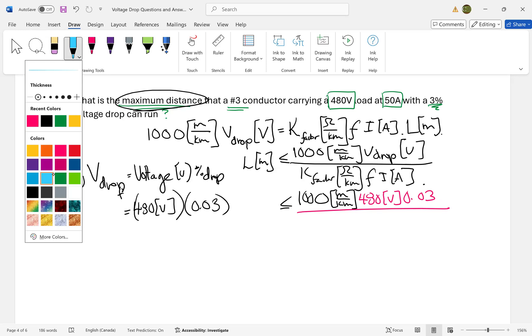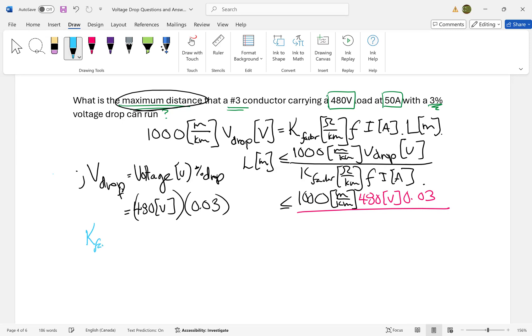I go to Table D3, the voltage drop calculation table. Assuming power factor equals 1, this is copper operating at 75°C. For a #3 conductor, I can read from the chart that K = 0.792 ohms per kilometer.